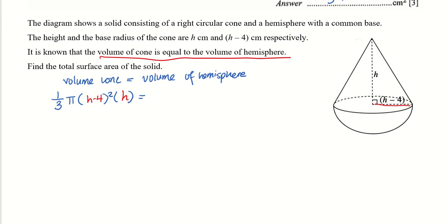Then the volume of the hemisphere involves a half times 4/3 pi r cubed. The r here is (h minus 4), so it's (h minus 4) cubed. Now I can cancel common terms: cancel pi, and cancel the 1/3 with the denominator. After simplifying, I'm left with (h minus 4) squared times h equals 2 times (h minus 4) cubed.